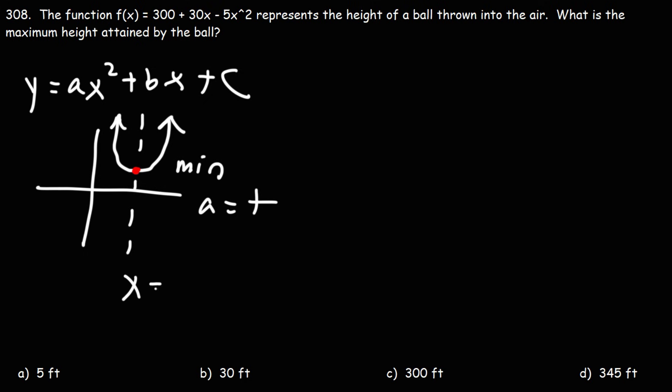To find the location of the vertex, you could use this formula. x is equal to negative b over 2a, where b is the coefficient in front of x. a is the coefficient in front of x squared.